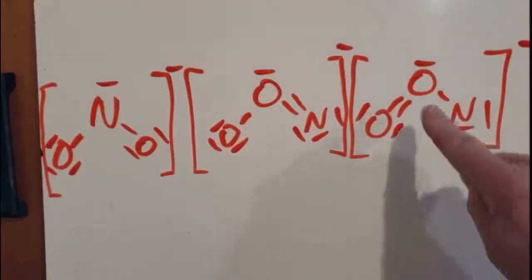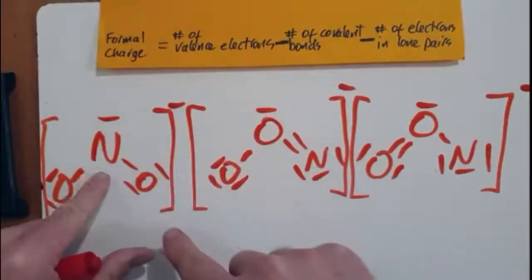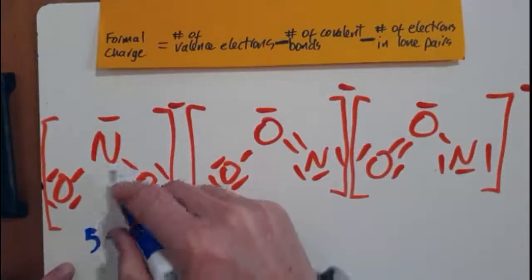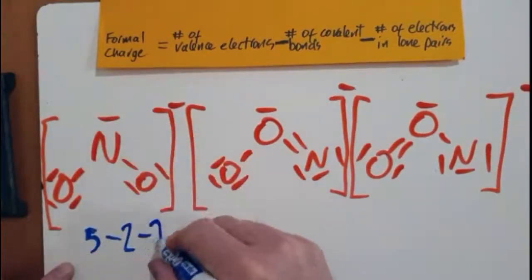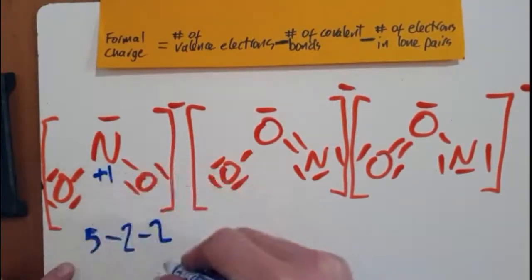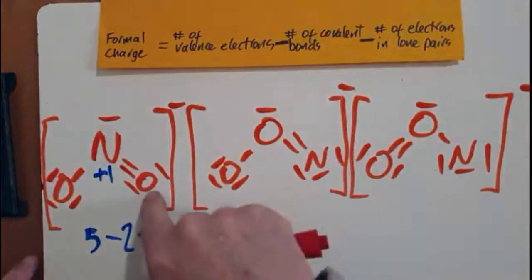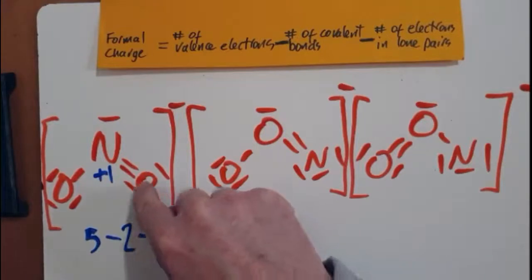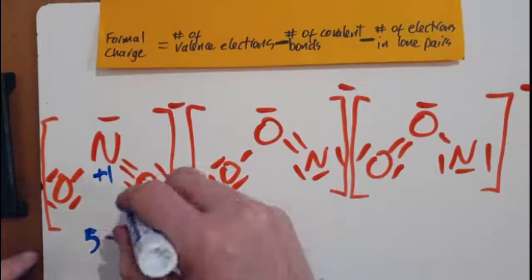All right, it's getting a bit messy, but there's three alternate structures. So the formal charge of the nitrogen is going to be, well, it's got five valence electrons on the nitrogen, minus two bonds. And how many electrons in a lone pair? That's two. So my formal charge is going to be plus one. Let me just pop that double in there. That was a mistake for me. Now for this one here, this oxygen has six valence electrons, minus two for the covalent bonds, minus four for the lone pairs. So that's going to give me zero.